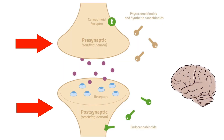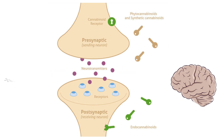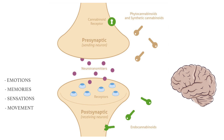The cells of the brain are called neurons. Neurons pass signals to each other by molecules called neurotransmitters that are released into a very small space between neurons. These signals result in emotions, memories, sensations in your body, and movement. When a signal is sent, neurotransmitters are released from the sending neuron into the space, and then fit nicely into the receptors of the receiving neuron, allowing the signal to pass from one neuron to the next.